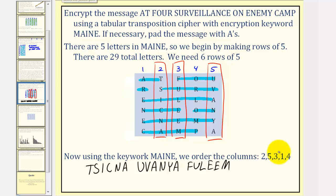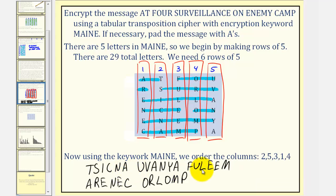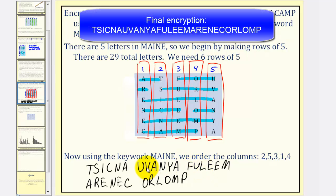Then column one. So we have ARENEC, and finally column four, so we have ORLOMP. Again, I think as our last step, we should remove the spaces or group these letters differently, not to give away how this was encrypted.